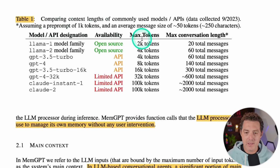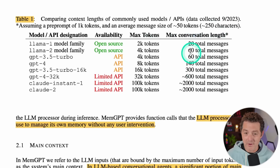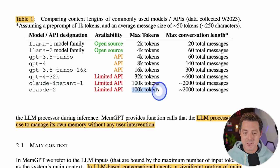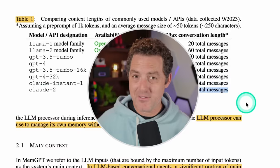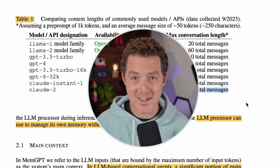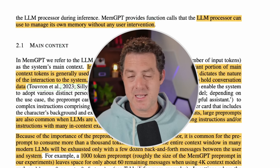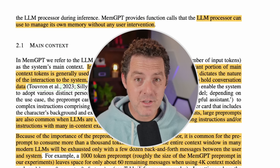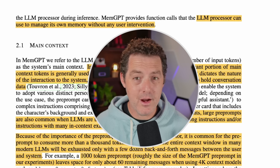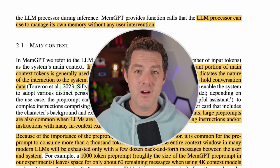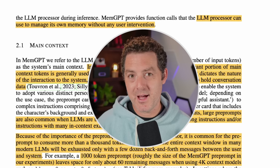The maximum conversation length, assuming an average message size, is very small. With only 4,000 tokens in Llama 2, you can have 60 total messages. On the highest end, Claude 2 at 100,000 tokens gives you 2,000 total messages — and I promise 2,000 messages is not a lot. Not only that, the main context is actually smaller than most people think. Even though it says 32,000 or 100,000 tokens, much of that is already taken up by the system message, historical information, and other relevant content. So you might think you have 16,000 tokens but in reality have closer to 12,000.